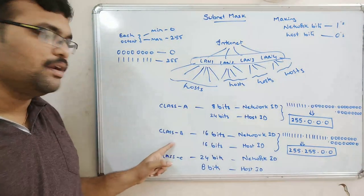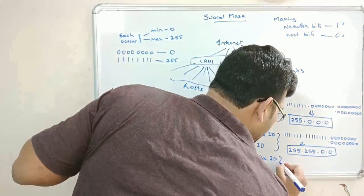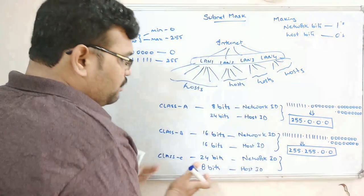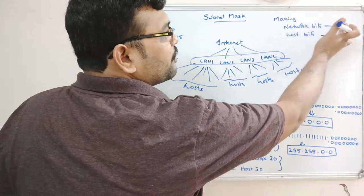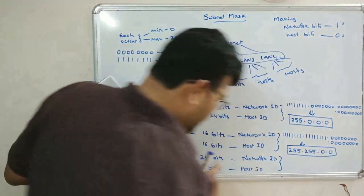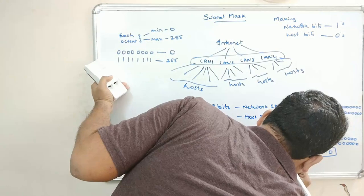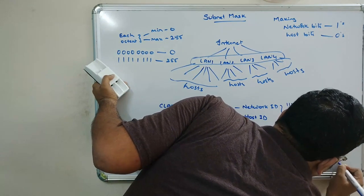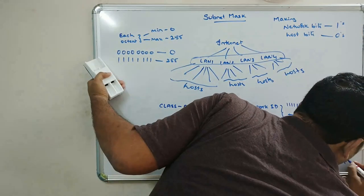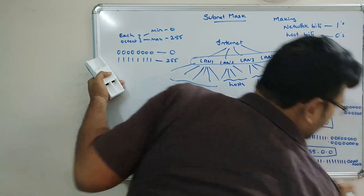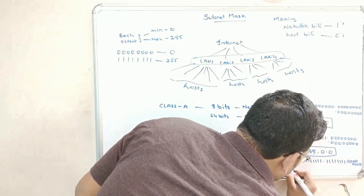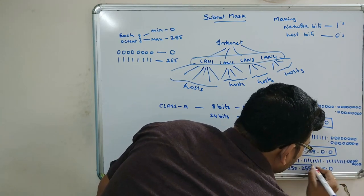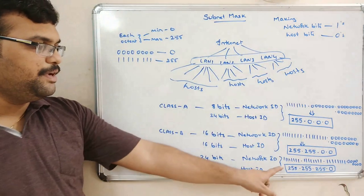For class C, the first 24 bits are the network ID and 8 bits are the host ID. Making all network bits 1 and host bits 0, the first three octets will be filled with all 1s and the fourth octet will be zeros. So the subnet mask for class C is 255.255.255.0.